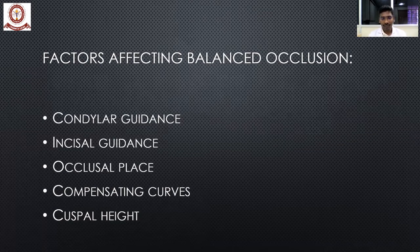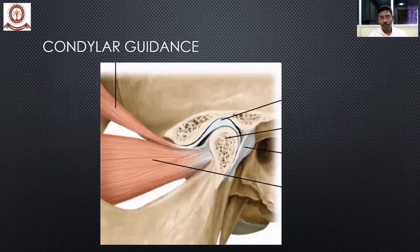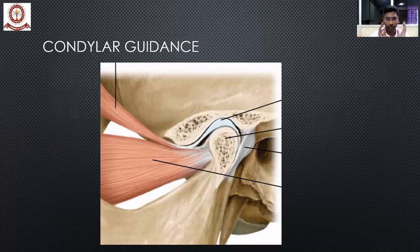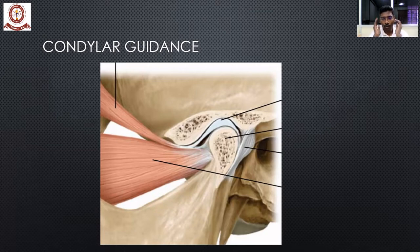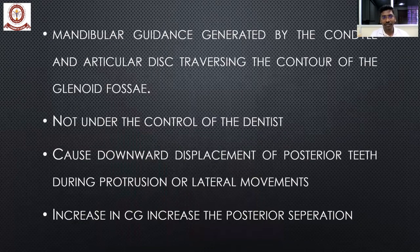The TMJ is composed of the condyle and upper articulating surface with the articular disc in between. The upper articulating surface is an S-shaped curve in the superior-inferior direction. When you protrude the mandible forward, the condyle is directed downward and forward because of the angulation of the articular eminence — this is called condylar guidance. The definition is: the mandibular guidance generated by the condyle and articular disc traversing the contour of the glenoid fossa.